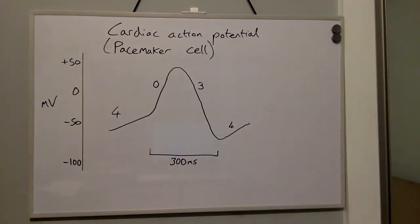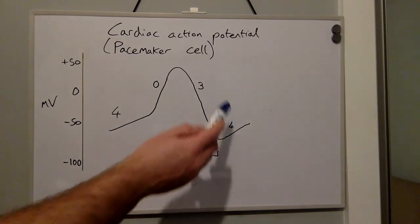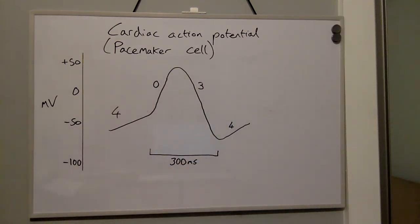Now to explain what happens to the cardiac action potential of pacemaker cells when there is activation of the sympathetic nervous system and when there is activation of the parasympathetic nervous system. This here is a normal trace of the cardiac action potential pacemaker cell when there is a balance of parasympathetic and sympathetic input.